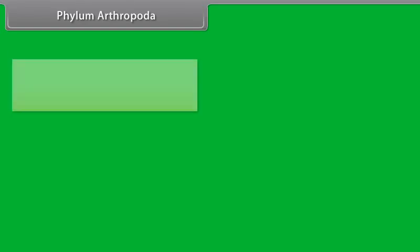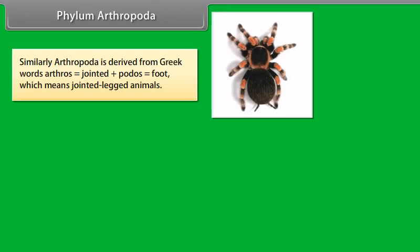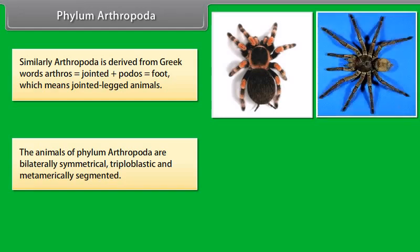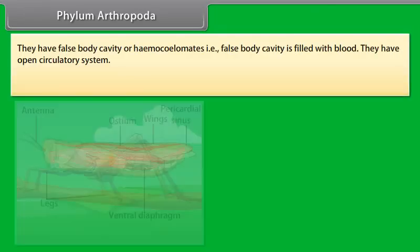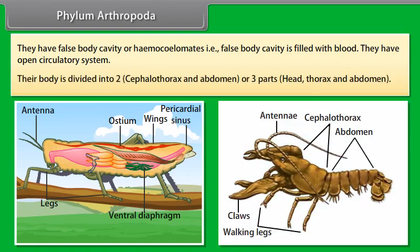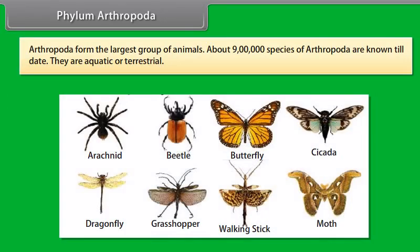Phylum Arthropoda. Arthropoda is derived from Greek words 'arthros' meaning jointed, plus 'podos' meaning foot, which means jointed-legged animals. The animals of Phylum Arthropoda are bilaterally symmetrical, triploblastic, and metamerically segmented. They have a false body cavity or haemocoelomates, that is false body cavities filled with blood. They have an open circulatory system. Their body is divided into two parts — cephalothorax and abdomen — or three parts: head, thorax, and abdomen. Arthropoda forms the largest group of animals; about nine lakh species are known till date. They are aquatic or terrestrial.